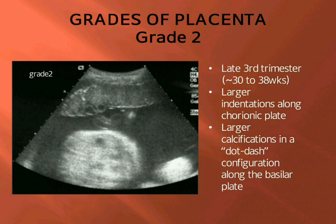Grade 2 appears late in the third trimester, between 30 and 38 weeks. There are larger indentations along the chorionic plate and larger calcifications in a dot-dash configuration along the basal plate.